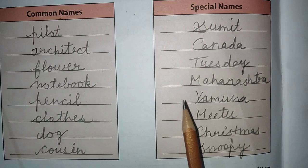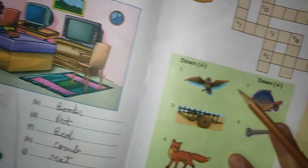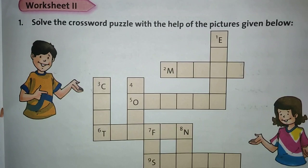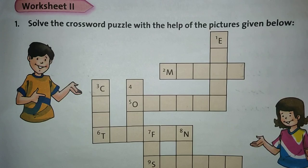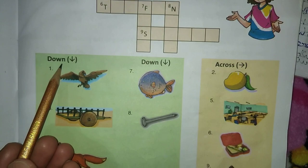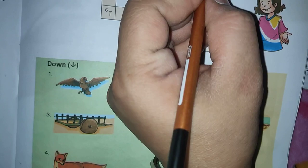This is worksheet 4. And today we will do worksheet number 2, which is on page number 3. Solve the crossword puzzle with the help of the picture given below. Now, for the across — first of all, we see downwards. The first one is — what is this? This is eagle.